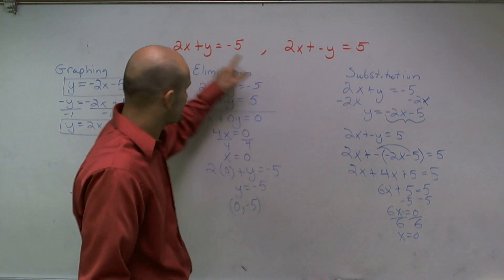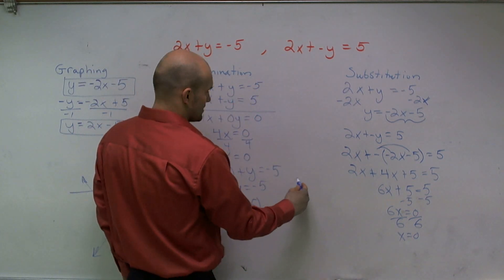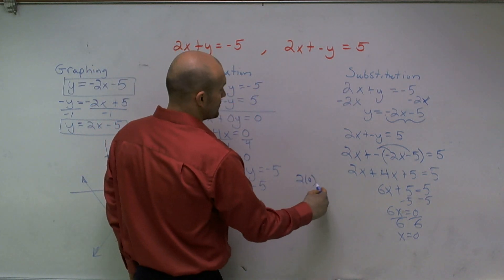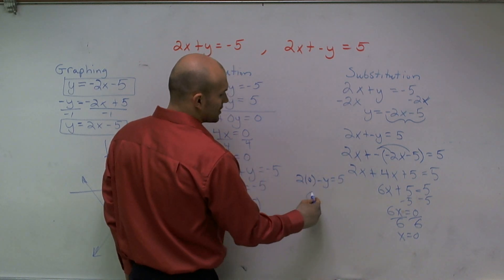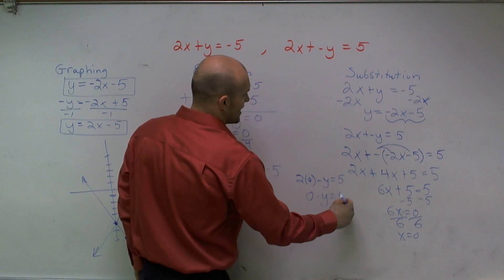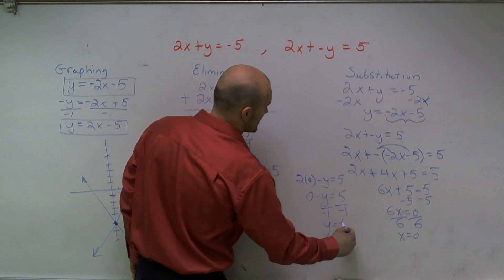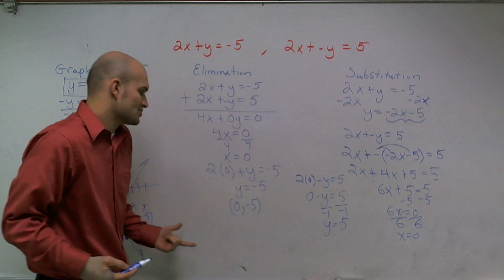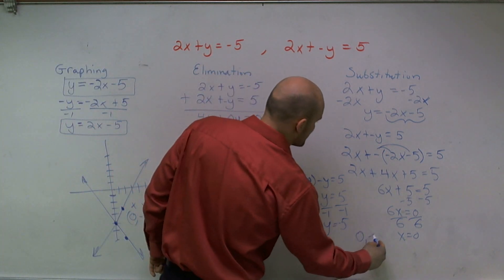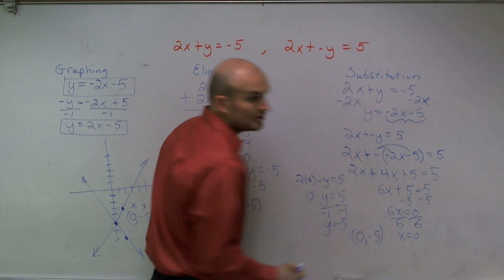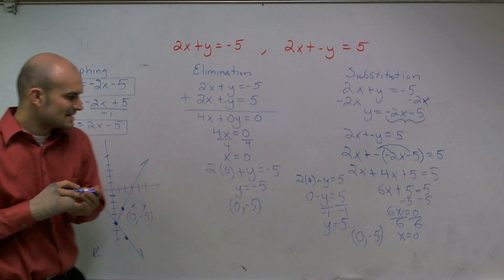Then I can plug that x equals 0. We already did that over here, but let's do it into the other equation just to show you. So let's do 2 times 0 minus y equals 5. Well, 2 times 0 is 0, minus y equals 5, divide by negative 1, y equals negative 5. Again, I just showed you we know that x and y equals negative 5. I write it as a coordinate point. And you guys can now see how I was able to obtain these three points.